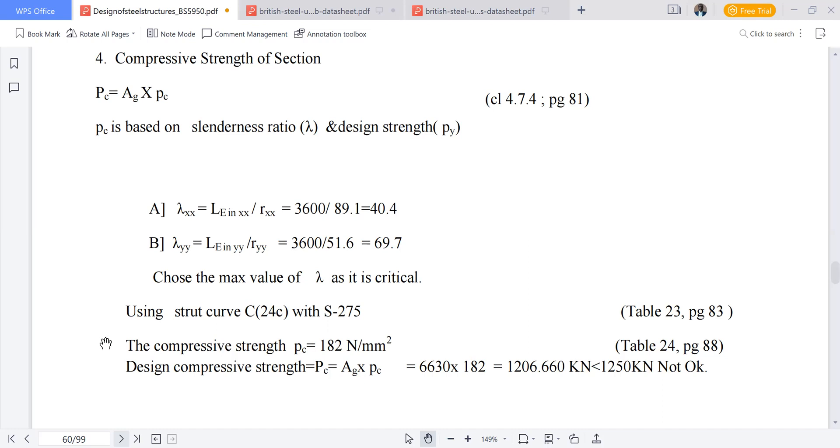Design compressive strength will be equivalent to gross area multiplied by the compressive strength we obtained from the table using the slenderness ratio and the design strength py, which gives us 182 multiplied by 6630, giving us 1206.660 kilonewtons. Remember our design load is 1250, meaning this column is not able to resist the applied load, so we say it's not okay.